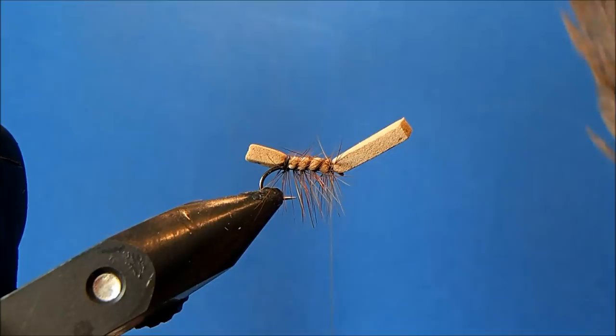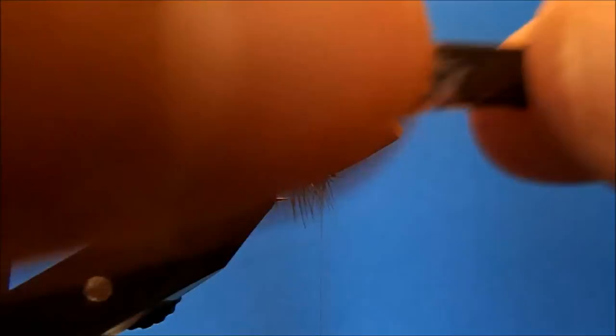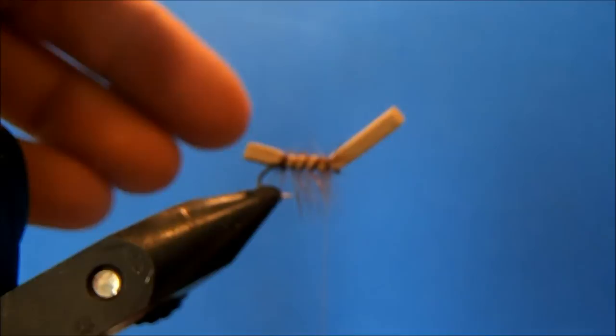Now the wing that I'm going to use is mottled turkey, so I'm going to take off a section of it. So I've got that off. There's two ends: this is the one closest to the stem, it's real stiff, and then as it goes out it gets more pliable.